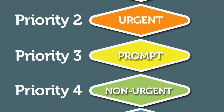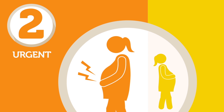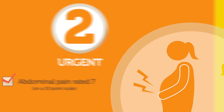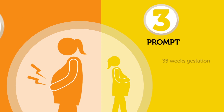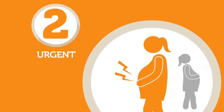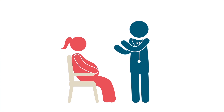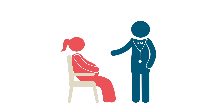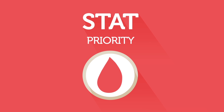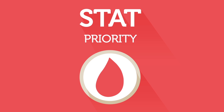Using the MFTI to prioritize these two women's urgency for provider evaluation, the first woman is a priority 2 urgent because she rates her abdominal pain as a 7 on a 10-point scale. The second woman is a priority 3 prompt because she is 35 weeks gestation and reports leaking clear fluid. The first woman should be seen first by a provider. Other questions used to determine priority level can include: does the woman or fetus require immediate life-saving intervention? If answered yes, this puts them at a STAT priority 1, where intervention is required to address problems such as hemorrhaging, signs of placental abruption, or a prolapsed cord.